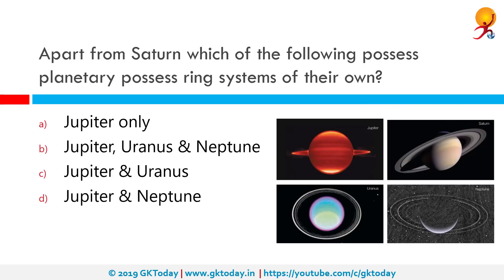Apart from Saturn, Jupiter, Uranus, and Neptune also possess planetary ring systems. Four of the eight planets in the solar system have rings: Jupiter, Saturn, Uranus, and Neptune. Saturn has by far the largest ring system and was known to have rings for a long time. It was not until the 1970s that rings were discovered around the other planets.